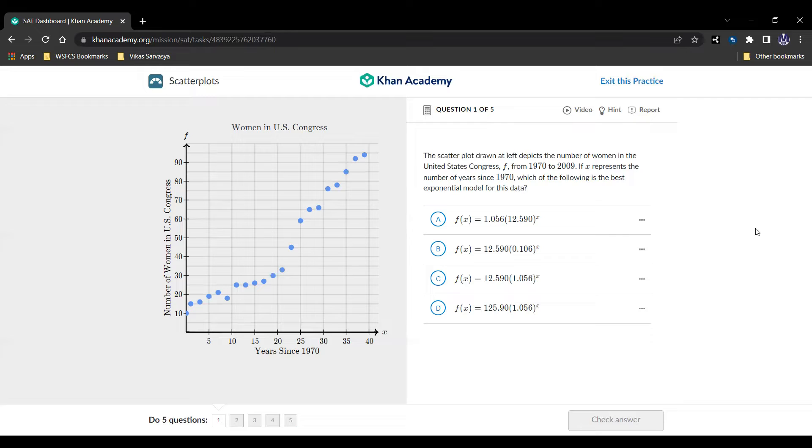Question number one, here we are. The scatter plot drawn at left depicts the number of women in the United States Congress, f, from 1970 to 2009. If x represents the number of years since 1970, which of the following is the best exponential model for this data? All right, so first we're going to find out where it starts. It starts around here, looks like around 10, right?